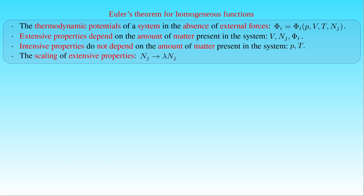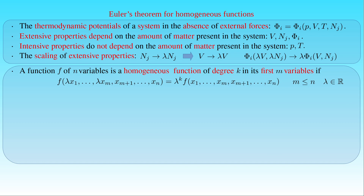If we scale the number of particles Nⱼ with a factor λ, then the volume V occupied by the particles also scales with the same factor. The thermodynamic potentials have the same scaling property — the potentials are multiplied by λ in a system with λ times Nⱼ particles. In mathematics, a function with such a property is called a homogeneous function. We call a function f of n variables a homogeneous function of degree k in its first m variables x₁, x₂, …, xₘ if f evaluated at λx₁, …, λxₘ, xₘ₊₁, …, xₙ equals λᵏ times f evaluated at x₁, …, xₙ, where λ is an arbitrary real parameter.